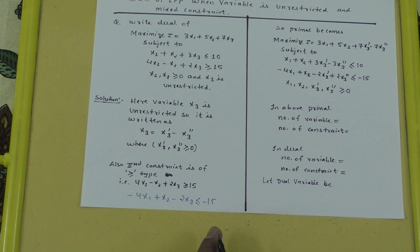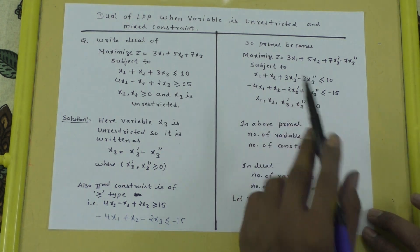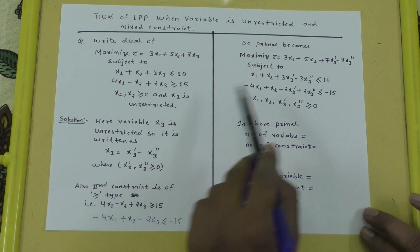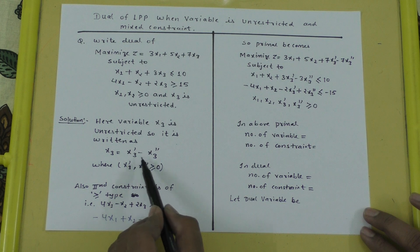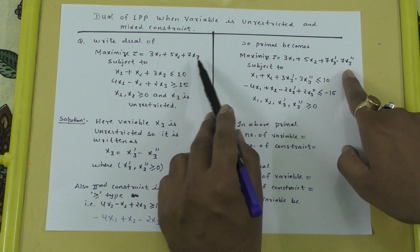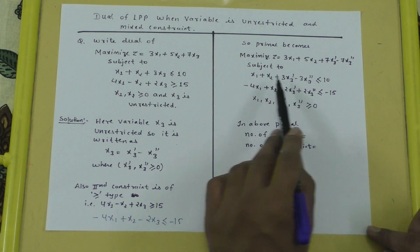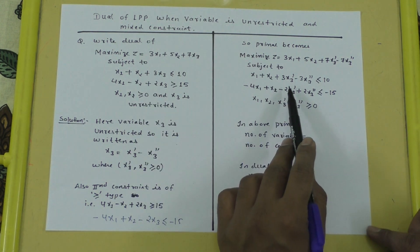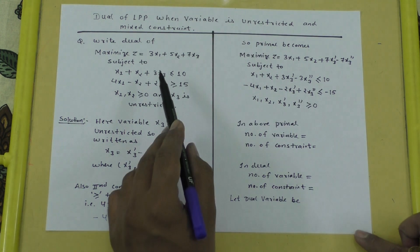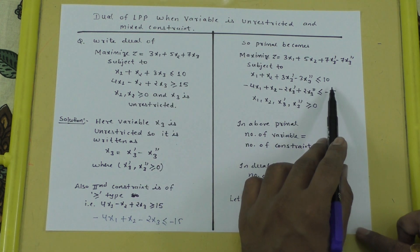Now, writing the primal with the substitution x3 = x3' - x3'': the objective becomes maximize 7(x3' - x3''). Subject to: x1 plus x2 plus 3(x3' - x3'') less than or equals to 10, giving 3x3' minus 3x3''. The second constraint, after multiplying by -1 and substituting x3, gives minus 2x3' plus 2x3'' less than or equals to minus 15. All variables are greater than or equals to 0.